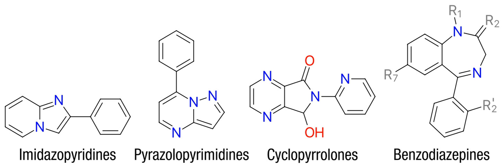Pyrazolopyrimidines, with members including Divoplon, Fasoplon, Indiplon, Lorpiplon, Ocenoplon, Panadiplon, Tanoplon, and Zaleplon — marketed as Sonata, Starnak, and Andante.